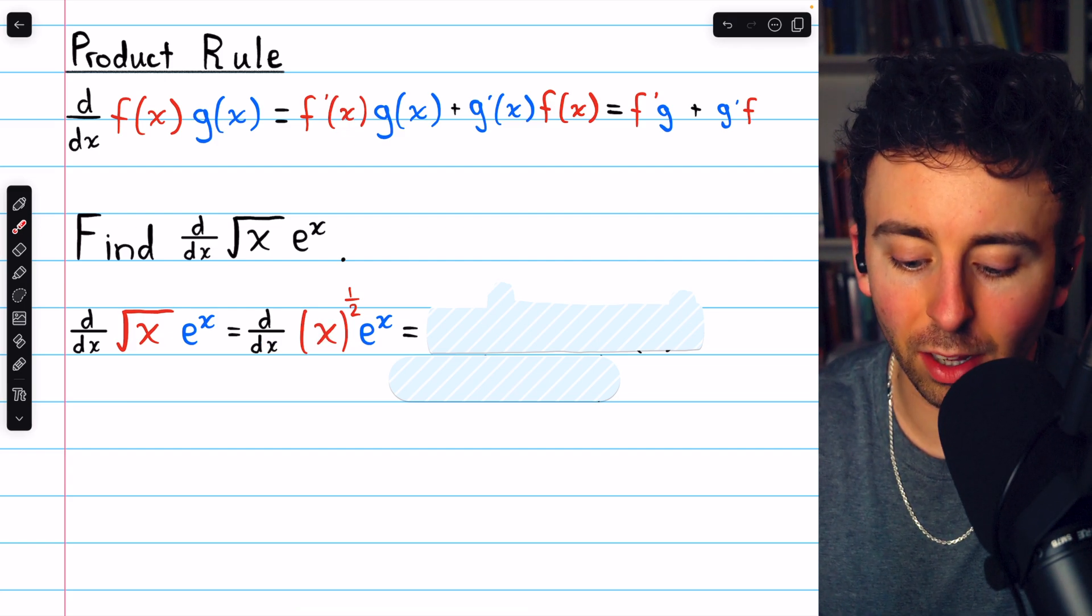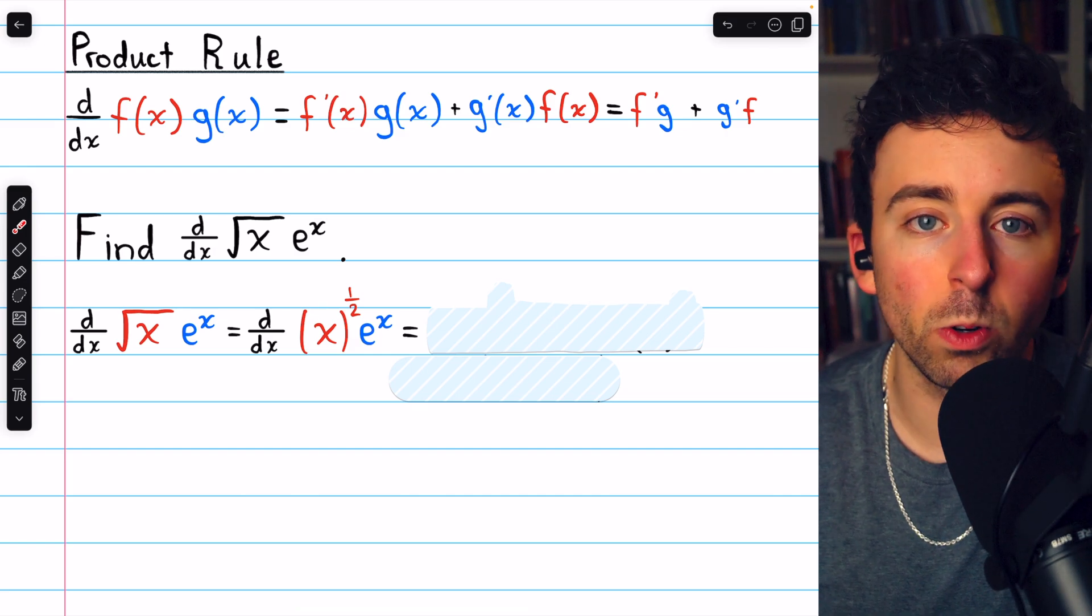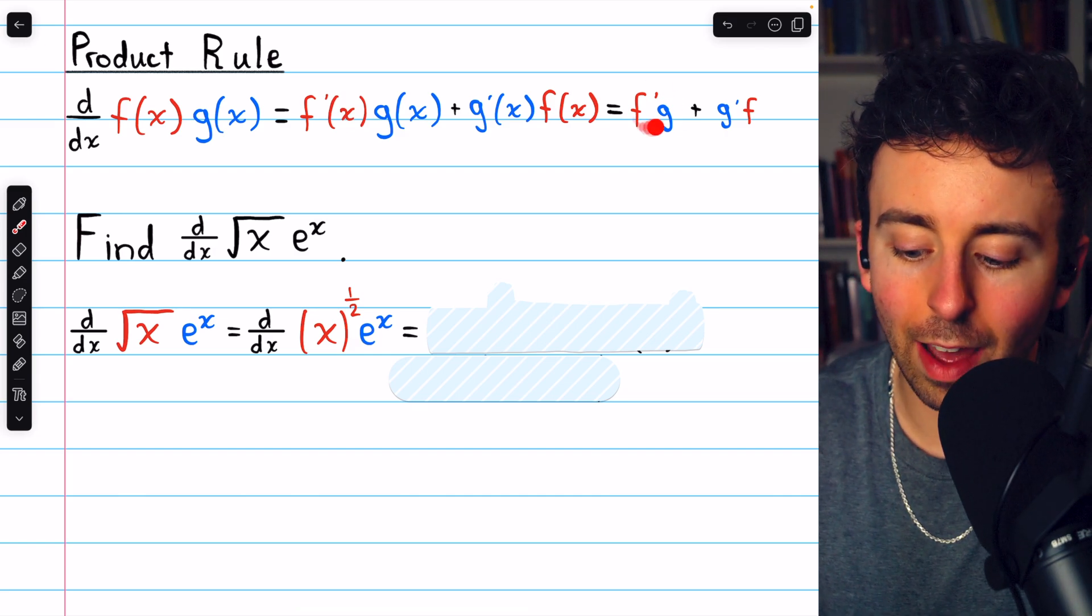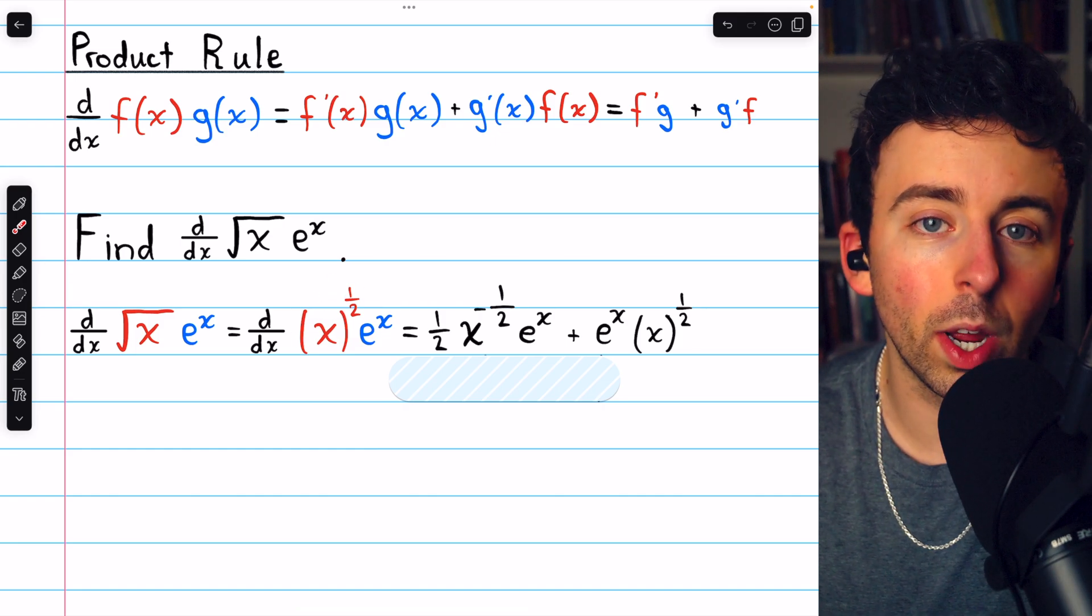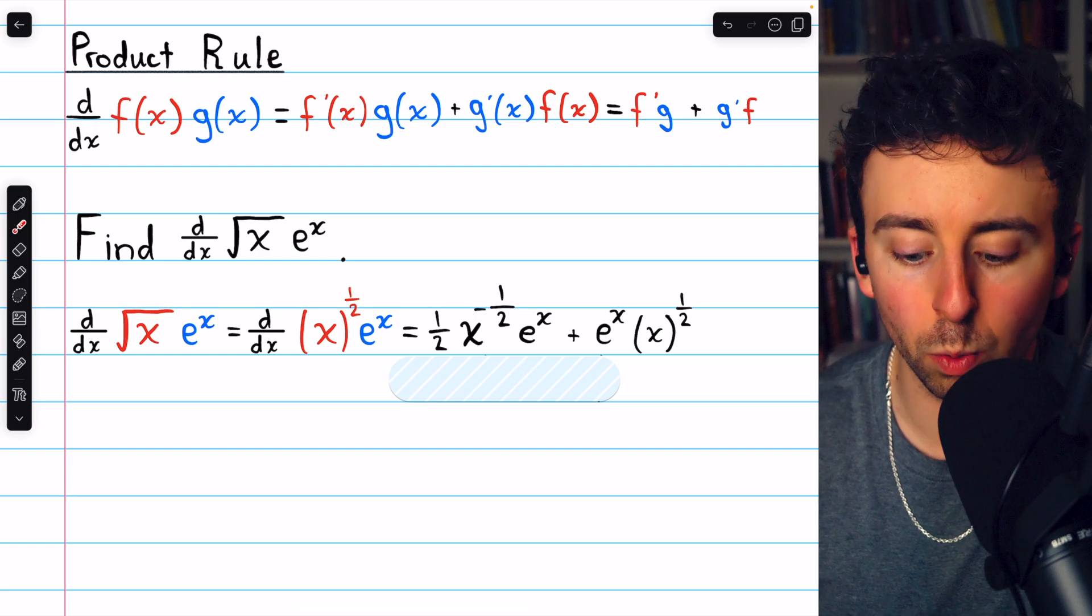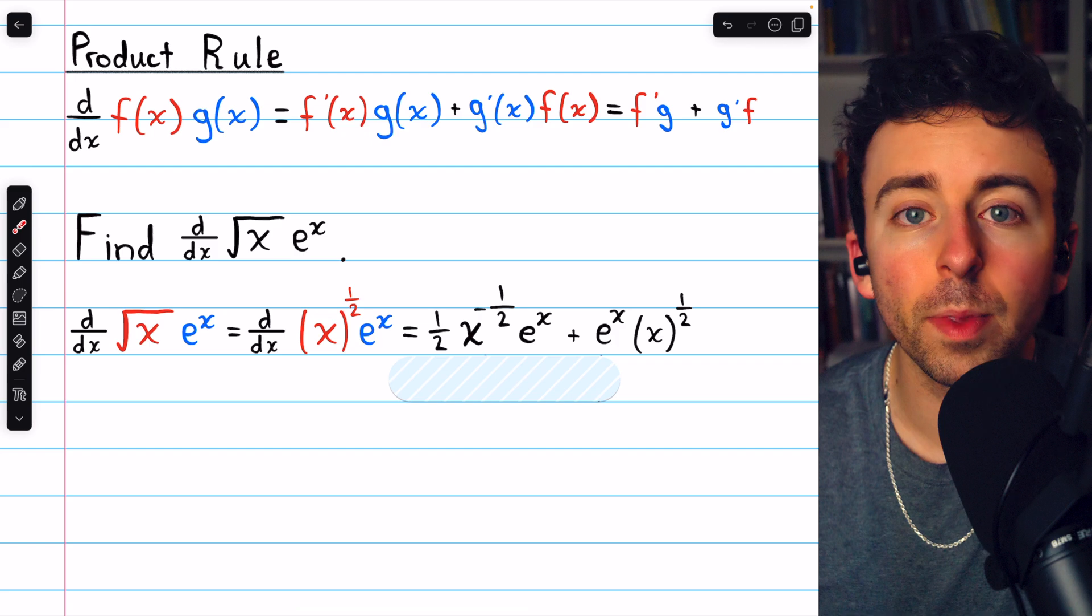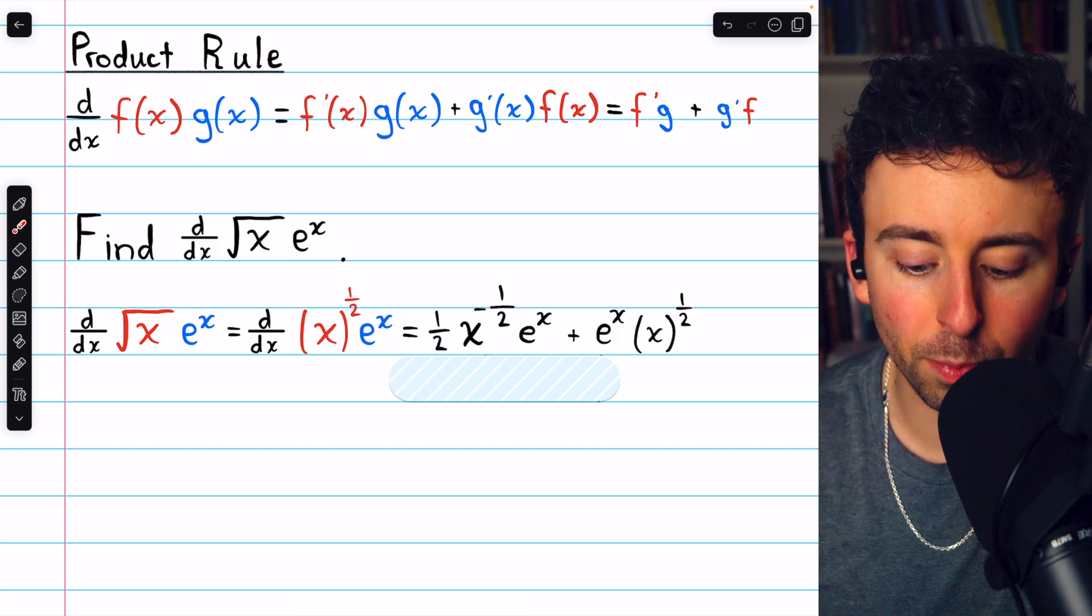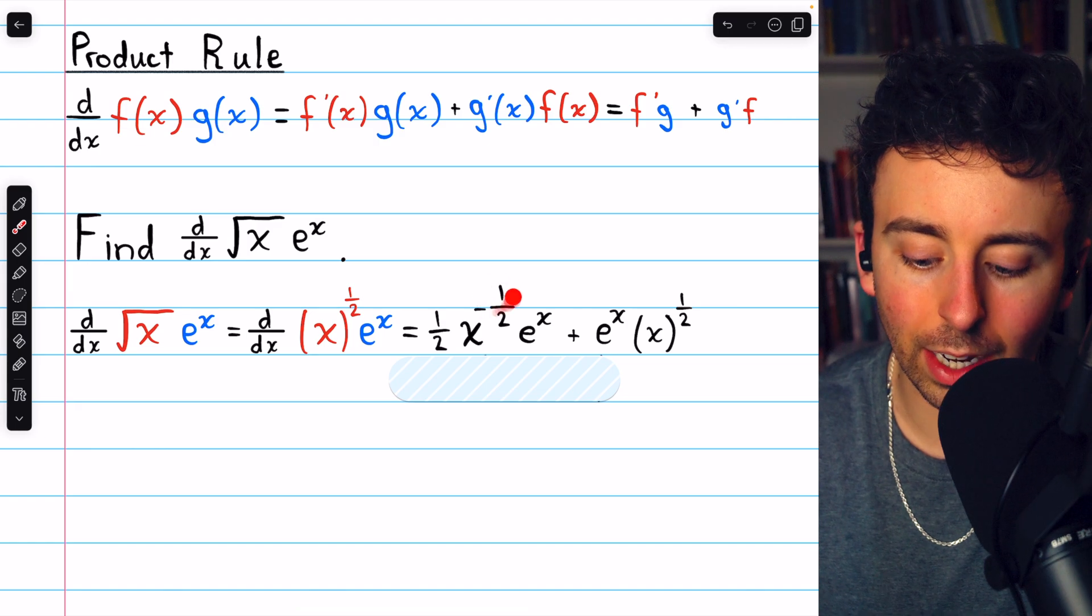We're taking the derivative of x to the one half, that's our f, multiplied by e to the x, that's our g. So we begin with f prime g. f prime is the derivative of x to the one half. We take the derivative of x to the one half using the power rule. The power of one half comes down as a factor. And then subtract one from the exponent. One half minus one gives us our new exponent of negative one half.